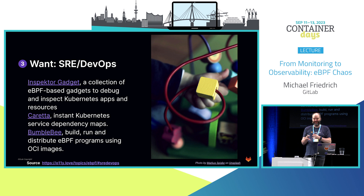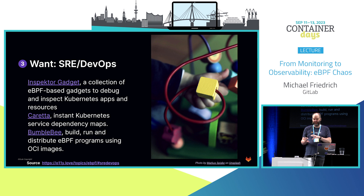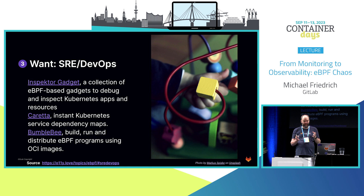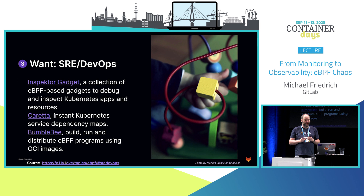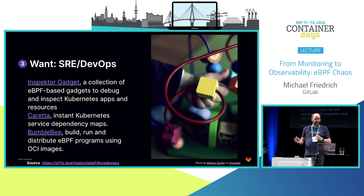Changing hats to SRE and DevOps: you might want to check out Inspector Gadget, a collection of eBPF-based tools to look into containers, different traffic, DNS resolution — things obvious on a single Linux machine but much harder in a distributed container cluster. Other examples include Kereta, similar to CoRoot for service dependency maps. And for distributing eBPF programs, the folks from Solo.io created Bumblebee — because you don't want to compile something that doesn't work on another system.